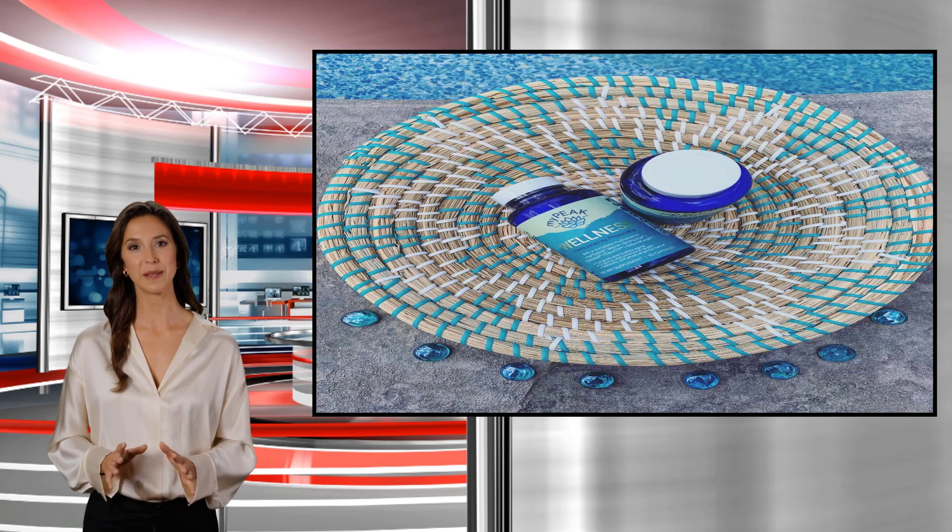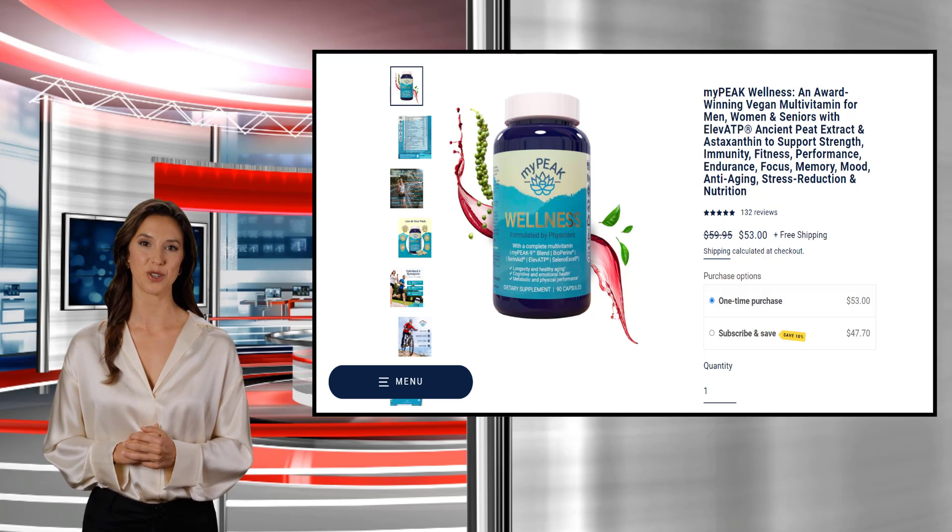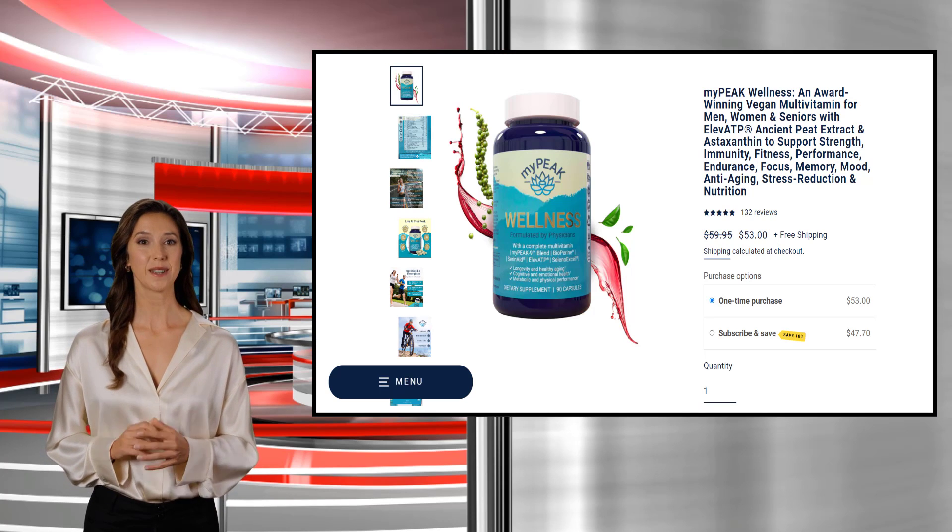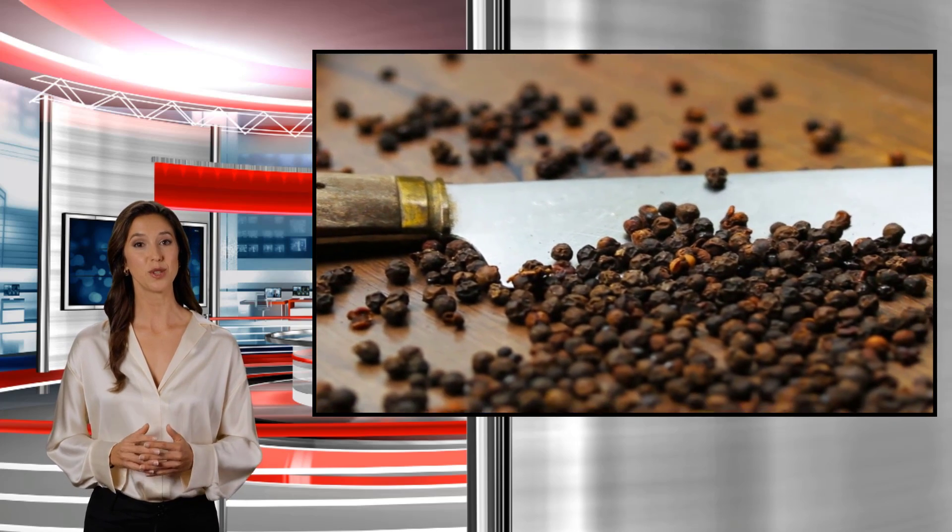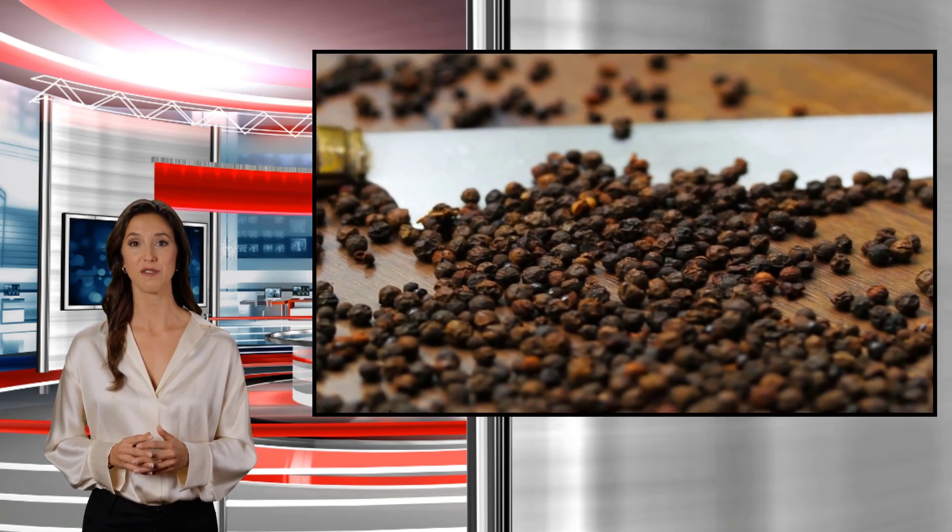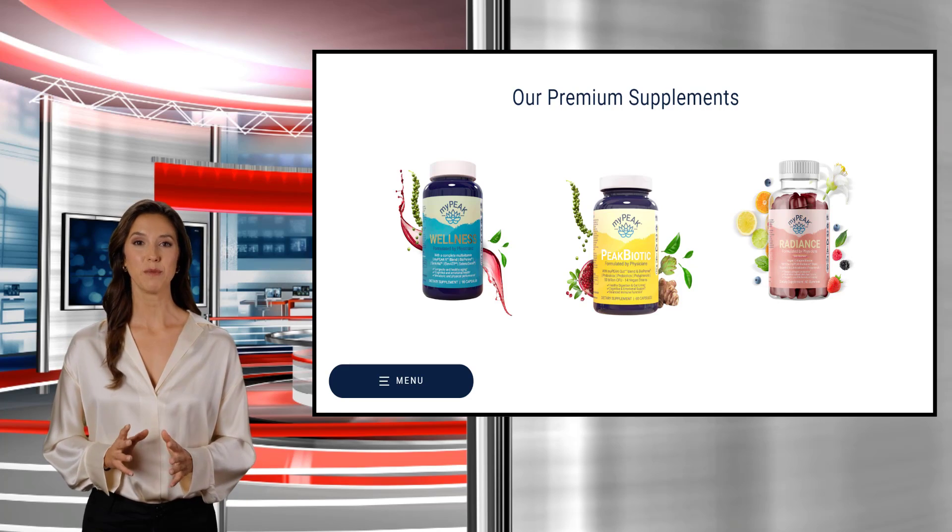MyPeaks Wellness Multivitamin Blend is a vegan, plant-based supplement that not only contains ancient peat extract, but also nootropics, a complete multivitamin, and a pepper extract called biopurine, which increases the bioavailability of the aforementioned vitamins and minerals. Learn more by visiting mypeaksupplements.com.